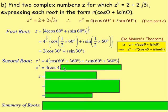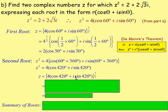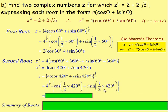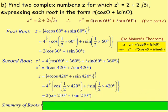So z² = 4(cos420 + i·sin420). To find z, we take this to the power of one half: 4 to the power of a half for the modulus, and we multiply the argument 420 by one half in both cos and sine. The square root of 4 is still 2, and ½×420 = 210, giving us the second root: 2(cos210 + i·sin210).